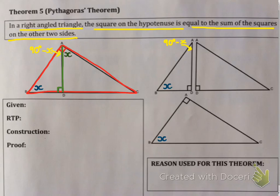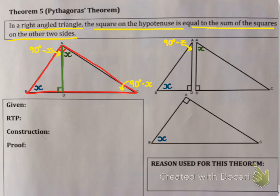Now simply because angle A is 90 degrees, if one part is 90 minus X, the other part must be X, because they have to add together to give me 90. The whole of angle A is 90 degrees. So angle A in my triangle on the right is X, which means angle C must be 90 minus X, because I've got 90 degrees at D, I've got X, and these three angles have to add to 180.